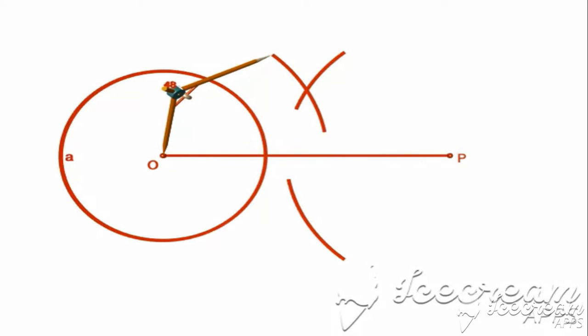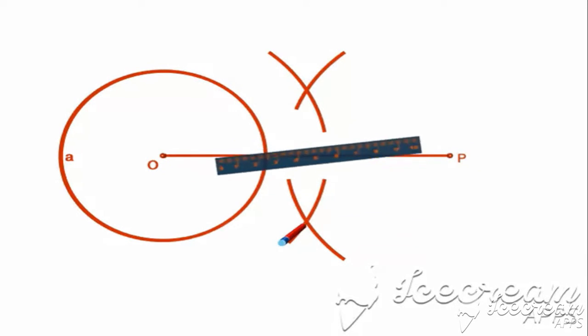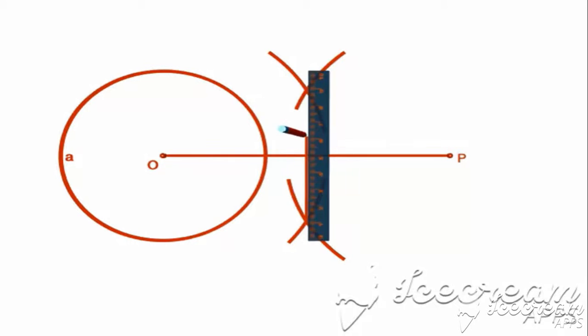O is center with same radius, draw two arcs which intersect previous arcs at two points. Now, join the intersection points of two arcs which intersects at M.